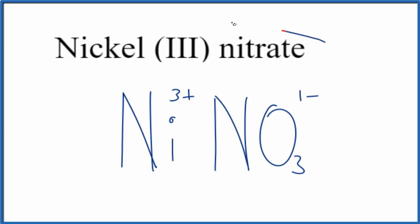So, nickel nitrate, it's a neutral compound, doesn't say ion after it. So the charges, these charges here, have to add up to zero, give us a net charge of zero.